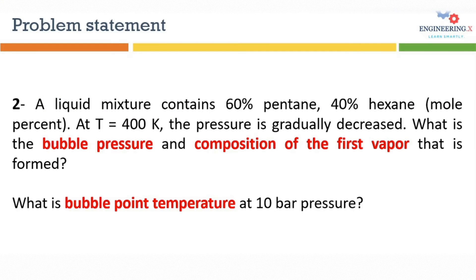Now let's solve a problem for mixtures. The problem statement is: a liquid mixture contains 60% pentane and 40% hexane in mole percent. At 400 Kelvin, the pressure is gradually decreased. What will be the bubble pressure and the composition of the first vapor formed? In the second part, we have to find what would be the bubble point temperature at 10 bar pressure. Let's move to HySys to solve this problem.